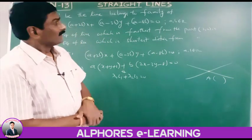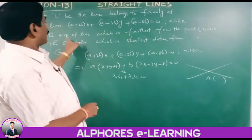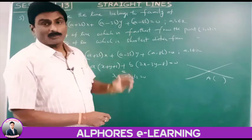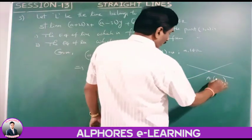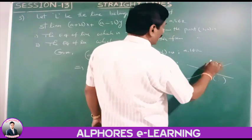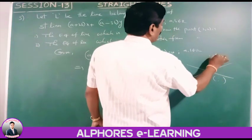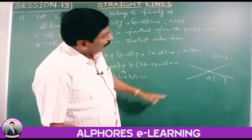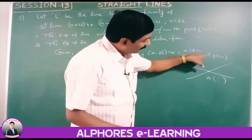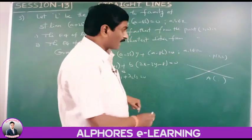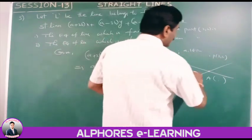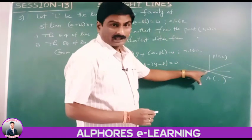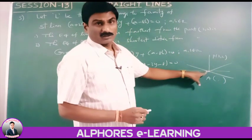Solving line 1 (x plus y plus 1 equals 0) and line 2 (2x minus 3y minus 8 equals 0) gives the point of concurrency A. The line farthest from P(2,2) that passes through A must be perpendicular to the line AP.